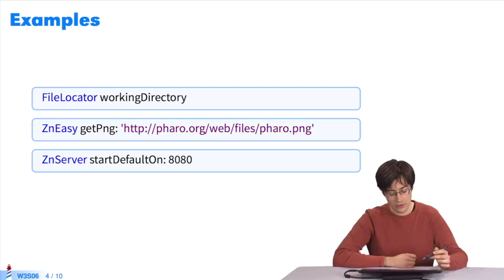I'll give three more examples. I send the message working directory to the class file locator. It returns the current path, the file where the execution takes place. In the second example, I send the message getpng to the object zn easy, with the URL of a png file as the argument. It returns the png file, which was previously downloaded.